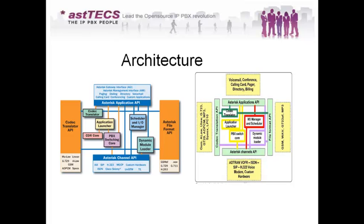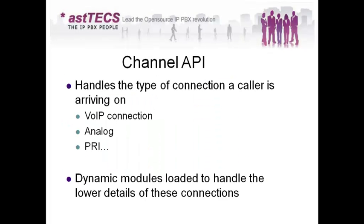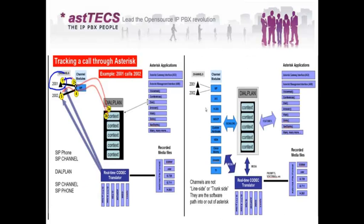Now we will also see practically how the architecture and these API components are used in a simple extension-to-extension call. In this example you can see a diagram — we have two diagrams. In the first diagram you can see 2001 and 2002 — two SIP phones connected to an Asterisk system.